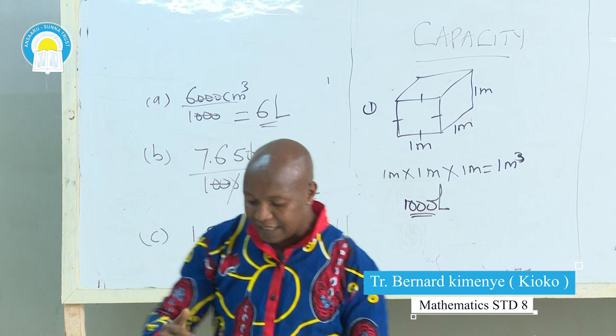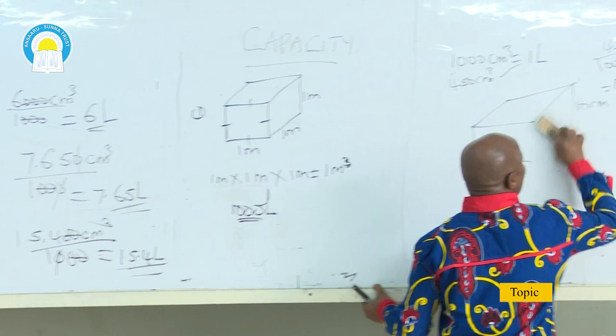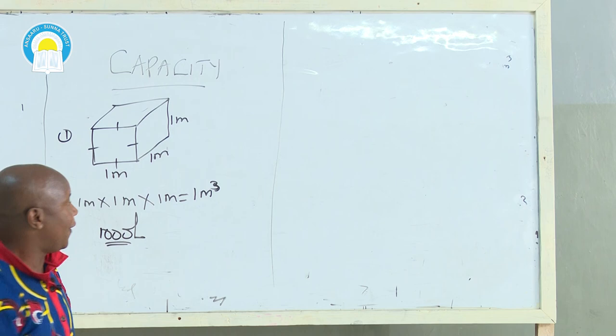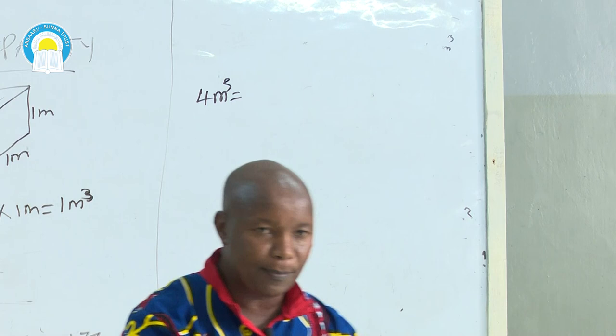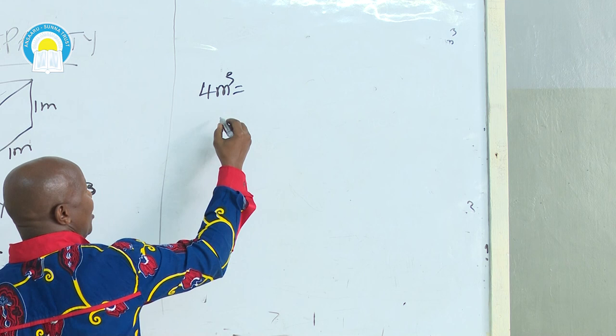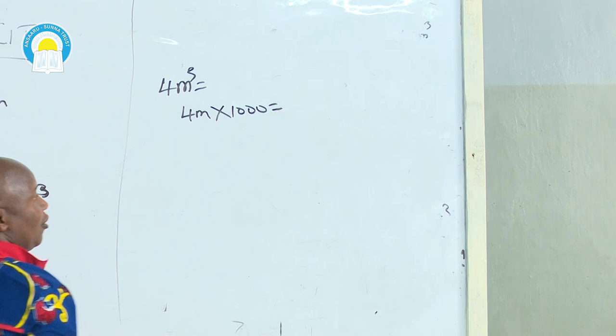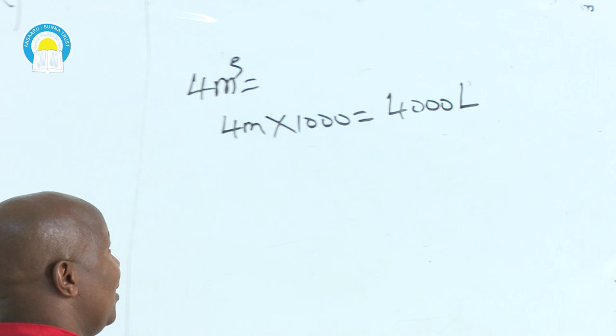Let me give examples of converting cubic meters to liters so all of you can understand. Question number one: convert 4 cubic meters into liters. To convert cubic meters to liters, simply multiply by 1,000. So 4 meters × 1,000 equals 4,000 liters.